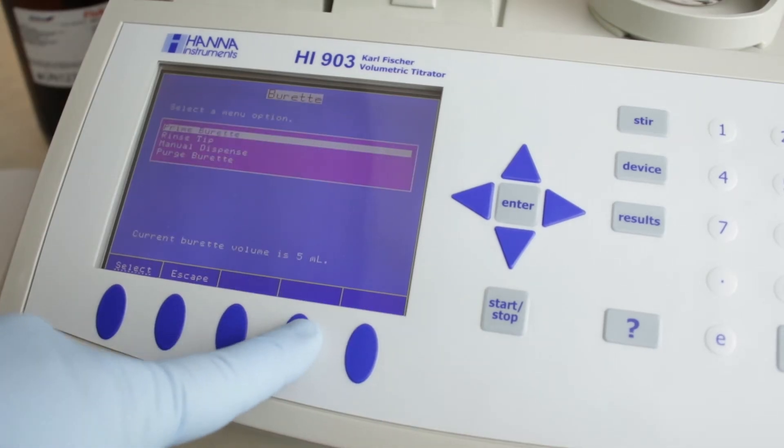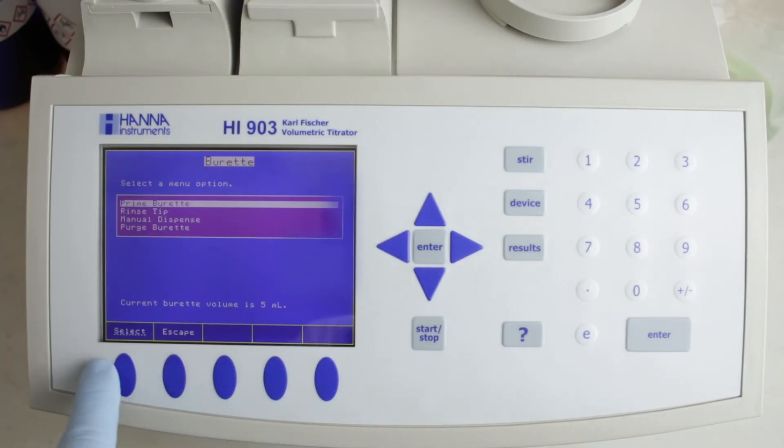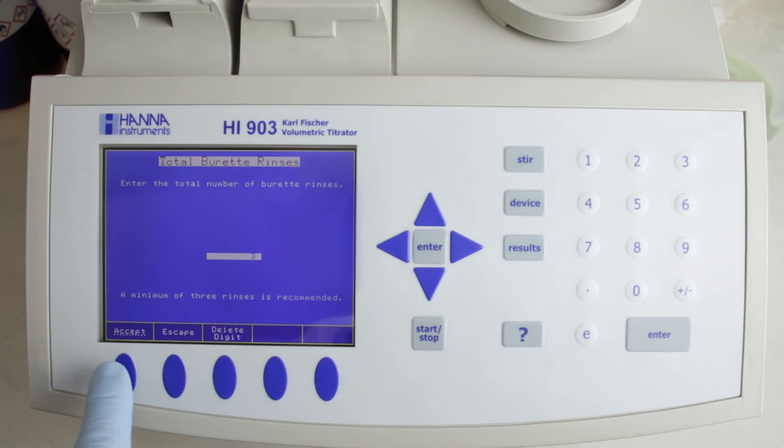Now press the burette button and select prime burette for three rinses to prime and fill the burette and hose lines all the way through the dispensing tip.